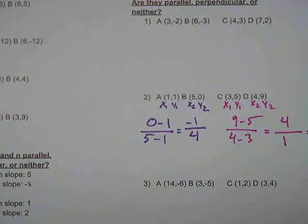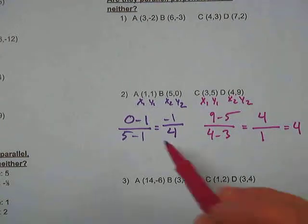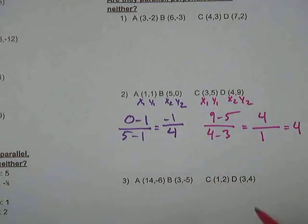Now we have to decide if they're parallel, perpendicular, or neither. When we reduce these, they're not going to be the same. Negative 1 fourth is as reduced as it gets, and 4 is as reduced as it gets. So we can say for sure that they are not parallel.